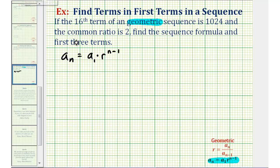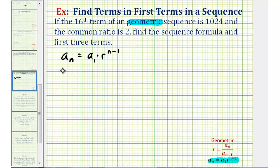So now if we go back and look at the given information, we're told the 16th term of the sequence is 1024, which means a sub 16 must equal 1024. We're also told the common ratio r is equal to two.